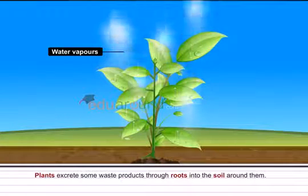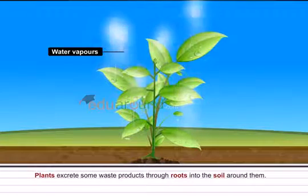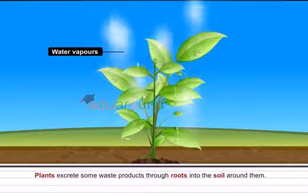Number six, plants excrete some waste products through roots into the soil around them.